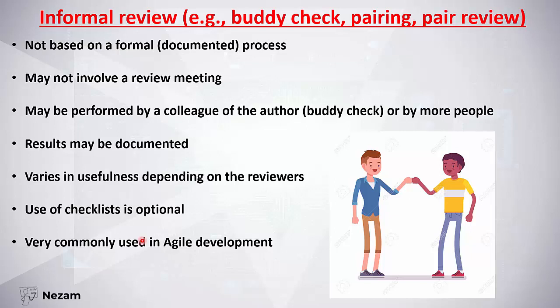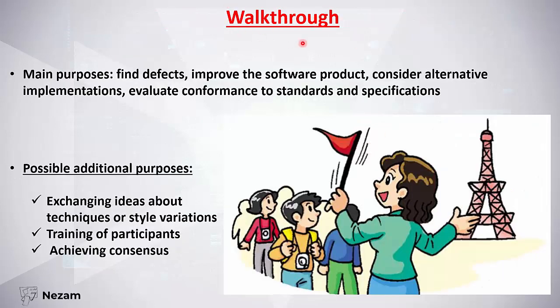The informal review means you and a colleague review a document together — for example, you wrote a test case and gave it to them for quick feedback. It is not based on any formal or documented process. There is no requirement for a review meeting. The reviewer may be the author's colleague or any other person. Results may or may not be documented, checklists may or may not be used, and it is very commonly used in agile development.